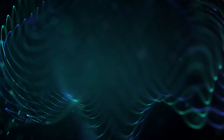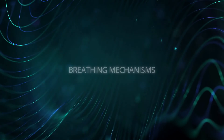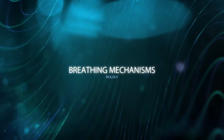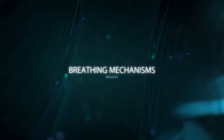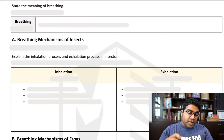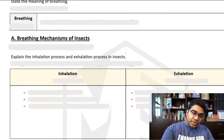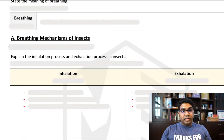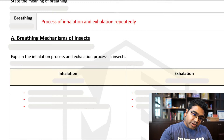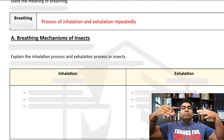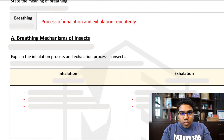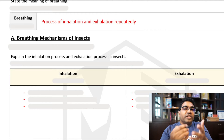In this video, we're going to look at breathing mechanisms of humans, then insects, frogs, as well as fish. First, we need to understand what breathing means. Breathing is basically the repeated action of inhalation — breathing in — and exhalation — breathing out. This is breathing.